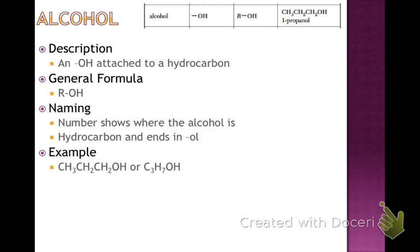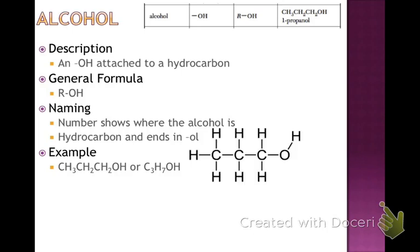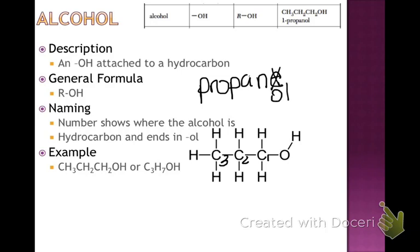Draw the molecule: three carbons with an OH group attached. We have carbons 1, 2, and 3 — so three carbons gives us prop. These are all single bonds, so we have AN for alkane, making it ANE — propane. Since we have an alcohol, we drop the E and make it OL instead, giving us propanol. The OH group is attached to the first carbon, so it's 1-propanol.